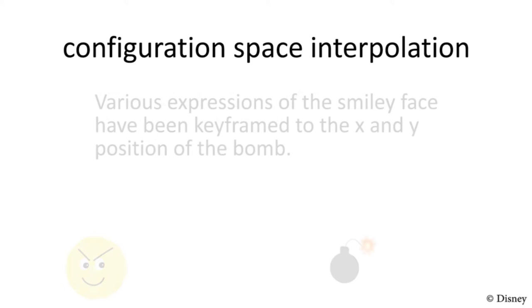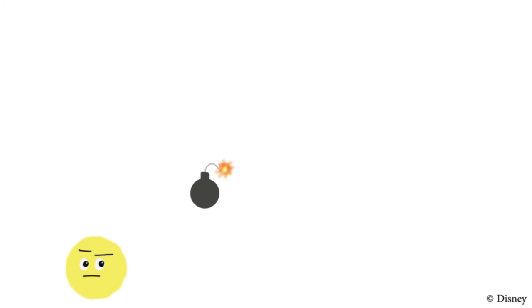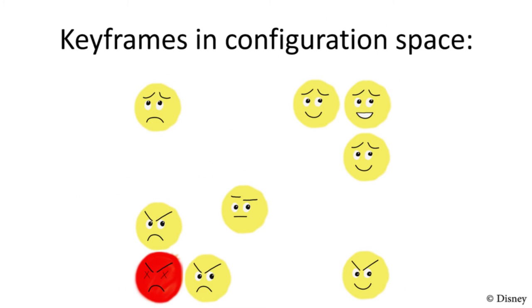The main ingredient in configuration space keyframing is a multi-dimensional interpolation scheme. Keyframes are points in configuration space, which, in this example, is defined by the x and y coordinates of the bomb. The strokes on the face are interpolated from the keyframes near the current configuration. This figure shows each keyframe at the corresponding bomb position.